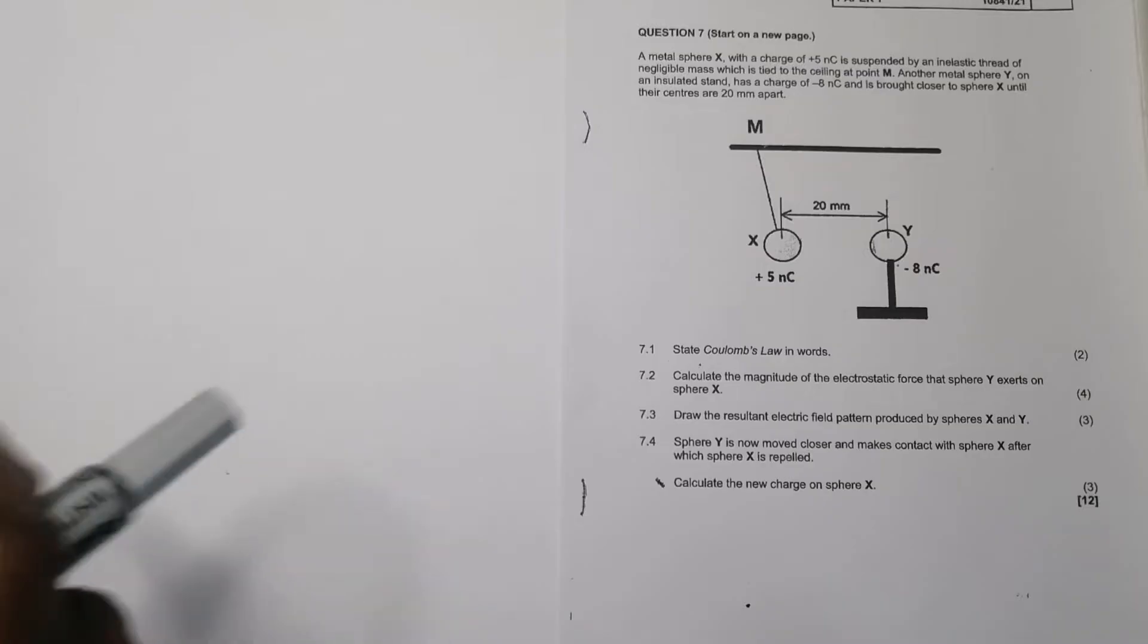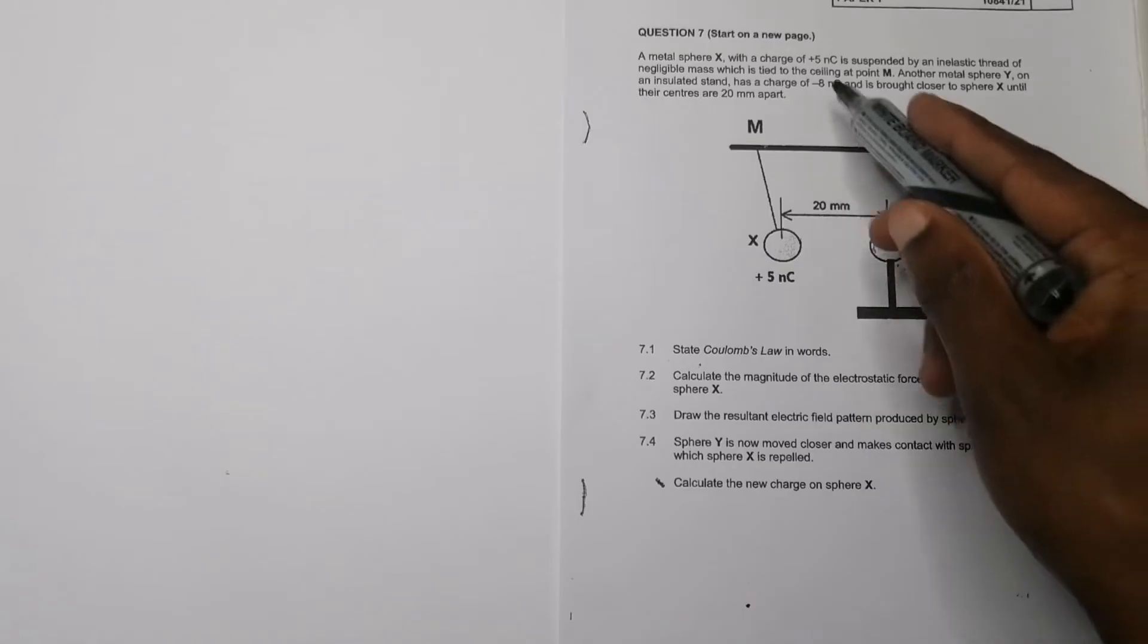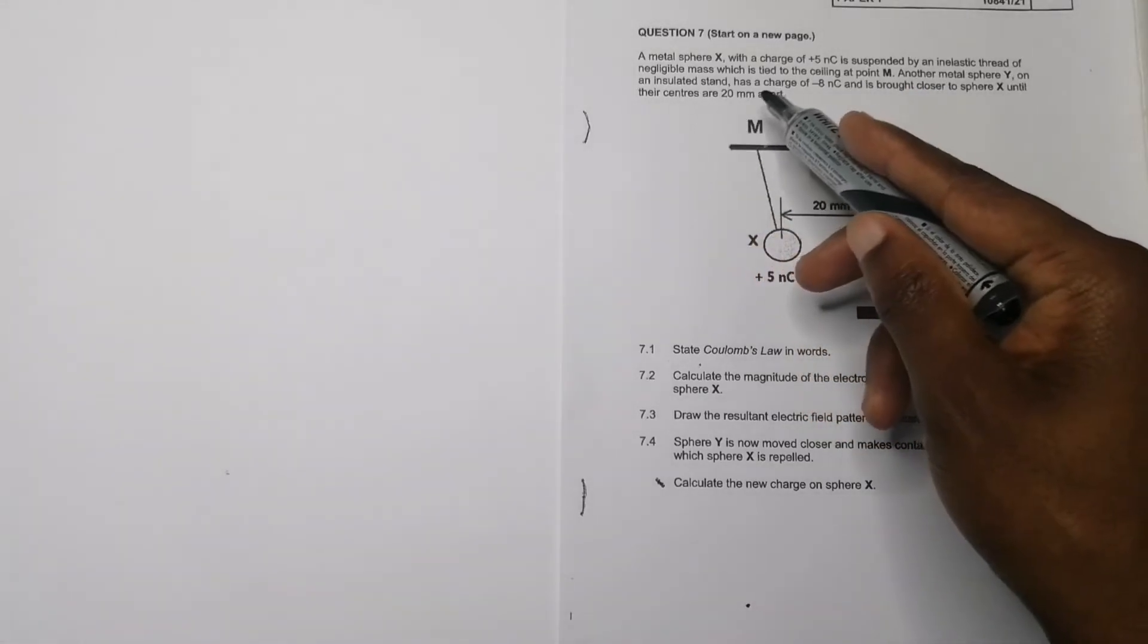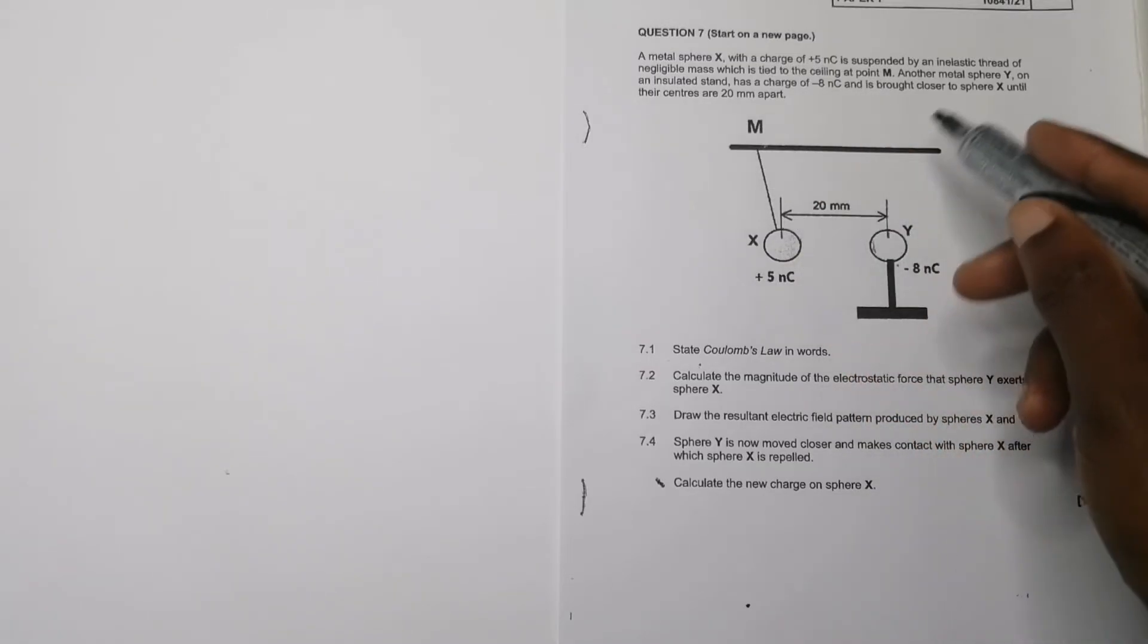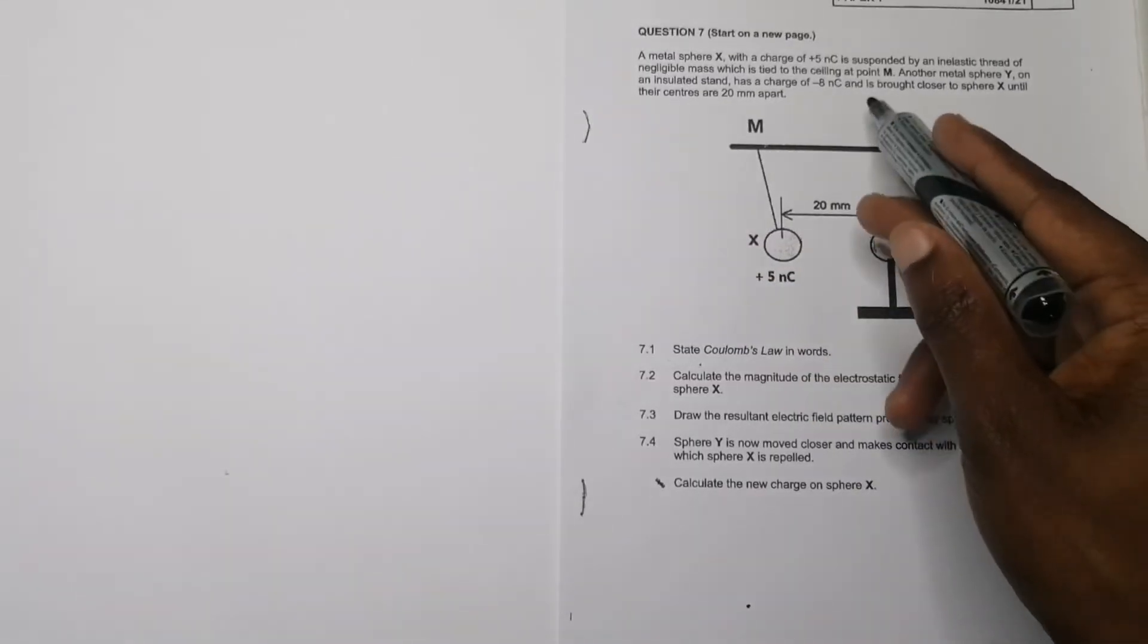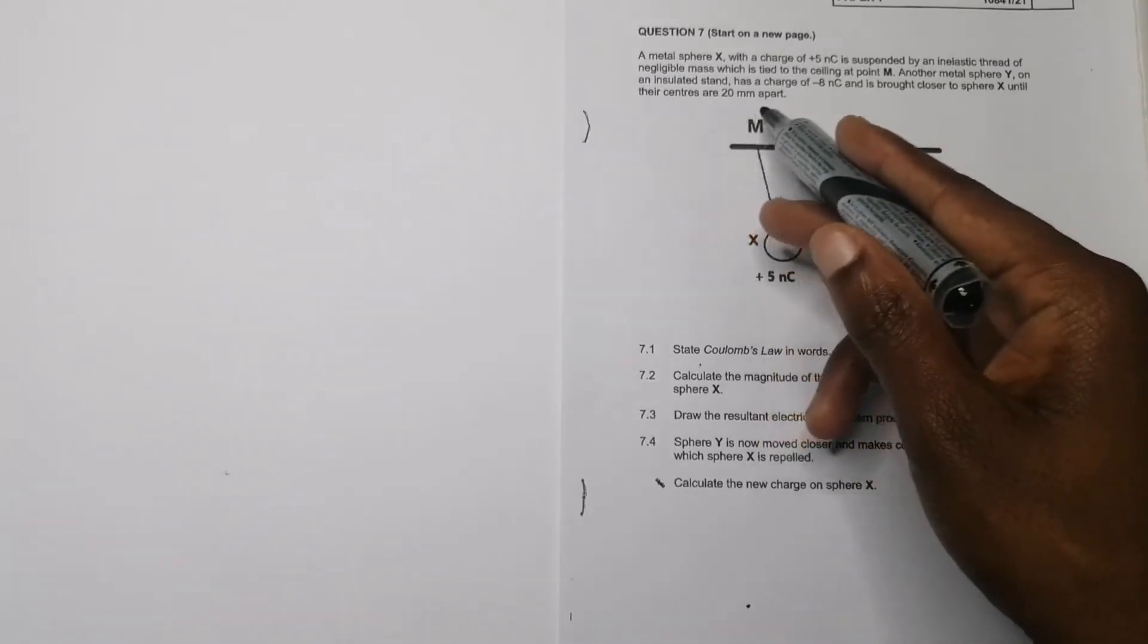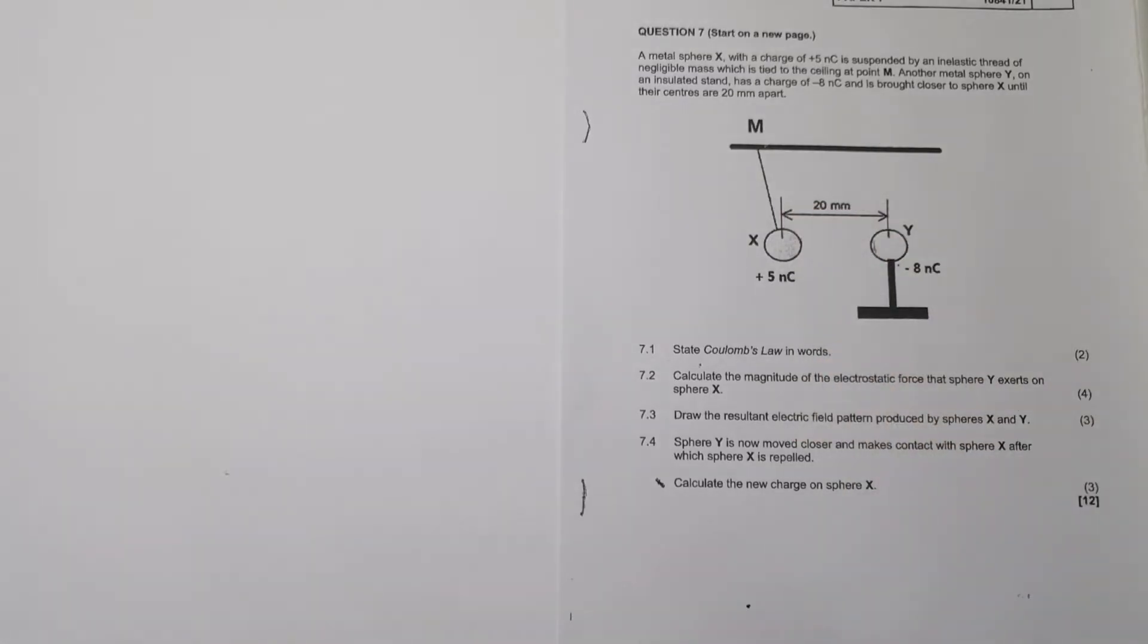We're looking at electrostatics this time around. We're given a metal sphere X with a charge of five nanocoulombs, suspended by an inelastic thread of negligible mass. Another metal sphere Y on an insulated stand is brought closer to X until their centers are 20 millimeters apart.